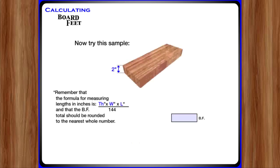Now, try this sample. Remember that the formula for measuring lengths in inches is thickness times width times length divided by 144, and that the board feet total should be rounded to the nearest whole number. Calculate the board feet for this piece. The answer rounded to the nearest whole number is 4 board feet.